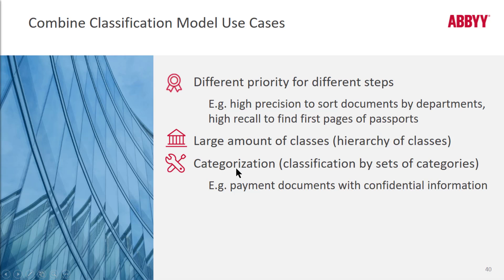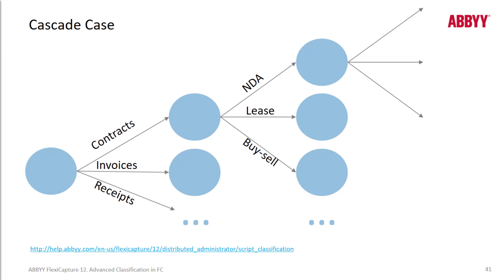A cascade gives higher quality — for example, if first passports are separated from contracts, and then contracts are classified by suppliers. Another categorization scenario is when the first step classifies document types, and then the second step is applied only to documents with sensitive information. We can visually see a cascade example where first documents are sorted by type into contracts and receipts, and then amongst the contracts, these are subdivided into contract types such as non-disclosure agreements or leases.